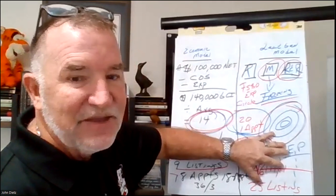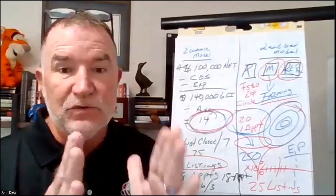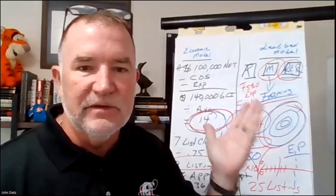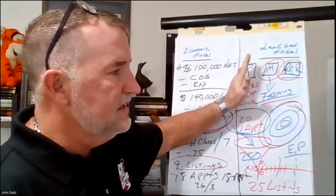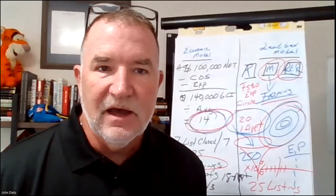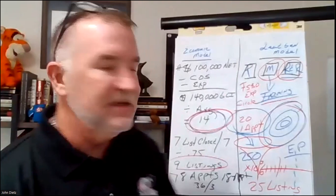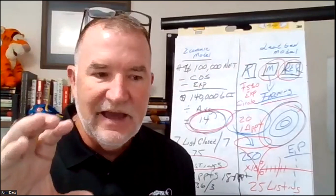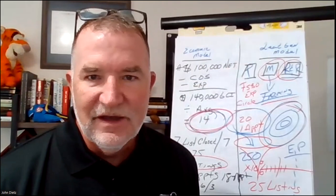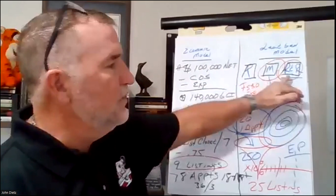The next step is the lead generation model — what am I going to do to get those three appointments every month? We can choose to build on repeat and referral business alone, do just marketing, or run a prospecting-based business. My suggestion would be to do all three. Ideally, a third of my business comes from prospecting, a third from marketing, and a third from repeat and referral business. For anyone in real estate less than a couple of years, those numbers won't necessarily work — in the beginning you'll be heavier on prospecting. But over time you want all three.